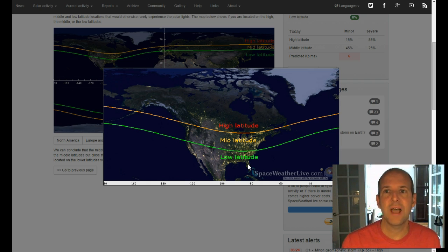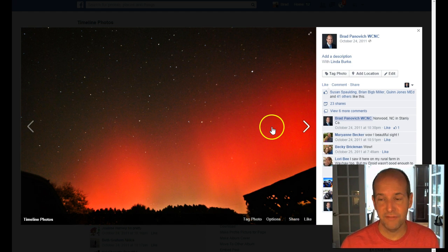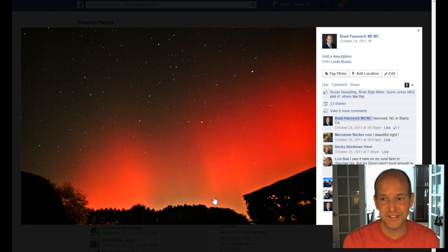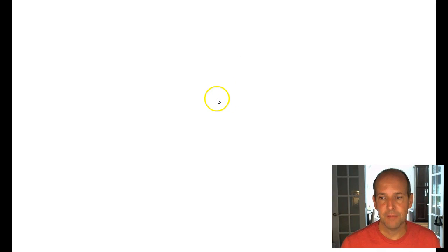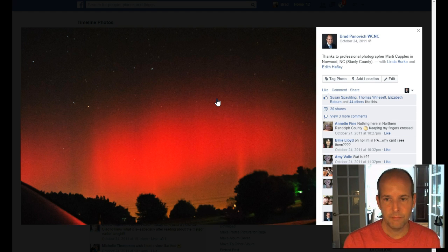And people ask me already, when's the last time this has happened? This is there is some precedent for this back in 2011 in North Carolina. I went on my Facebook page because I remember this pretty vividly. This was the Aurora on October 24th, 2011, in Stanley County, just to the east of Charlotte. Marty Couples sent this to me. She lives in Norwood. And she was shocked. She went out to get groceries and looked up and she set her camera up and got this picture of a red Aurora and then sent me this picture of an Aurora as well. You could see just beautiful, beautiful pictures.